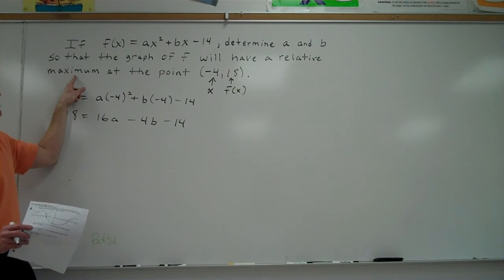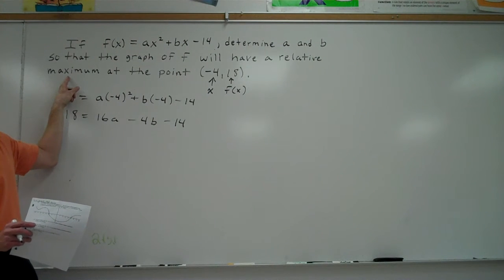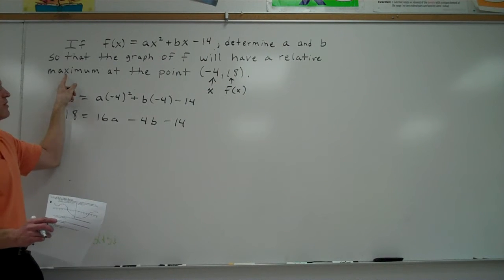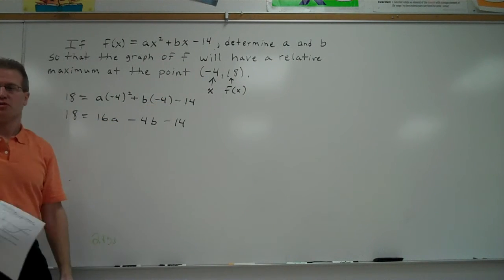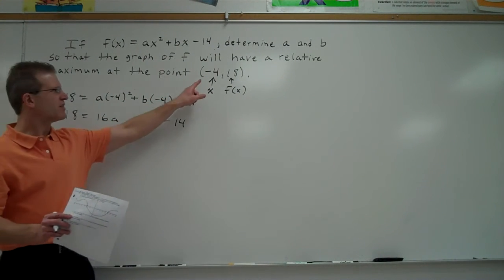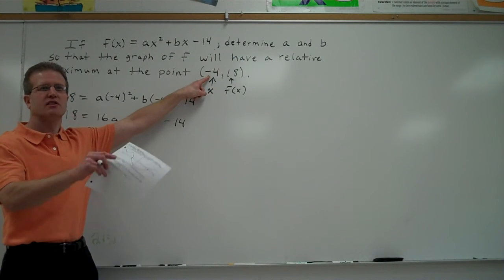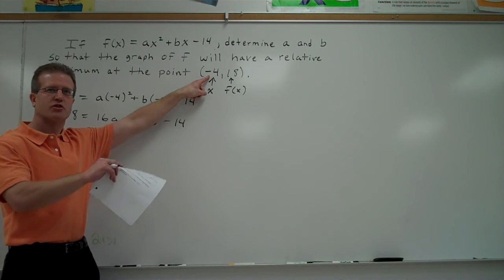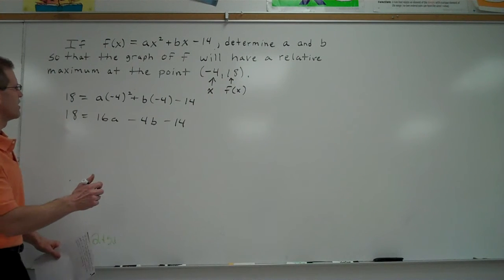would this parabola... What would the derivative be at the maximum? Zero. Yeah. The derivative would be zero because the slope would be zero. What would the x-coordinate be? Negative 4. Yeah. So what we can do is plug negative 4 into the derivative, and we should get zero. Because the slope should be zero at the maximum. So let's do the derivative now.